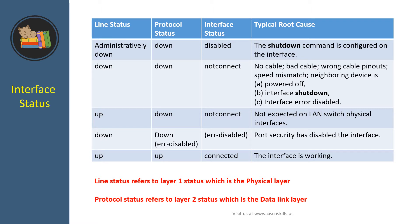The table also shows a typical root cause for each status. For example, when the line status is administratively down and the protocol status is down — which means the interface is disabled — the typical root cause is that the shutdown command is configured on the interface.